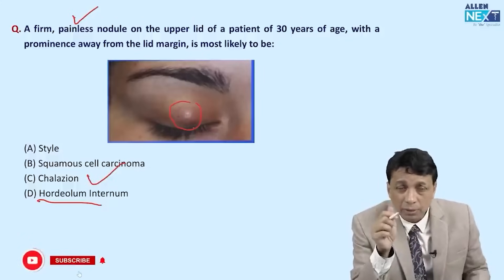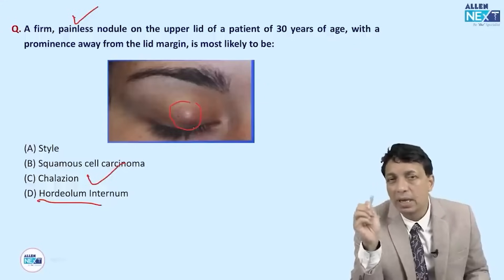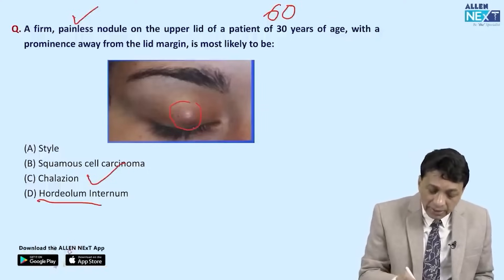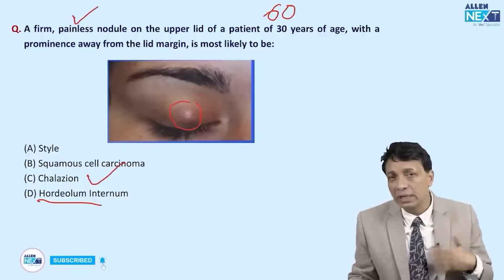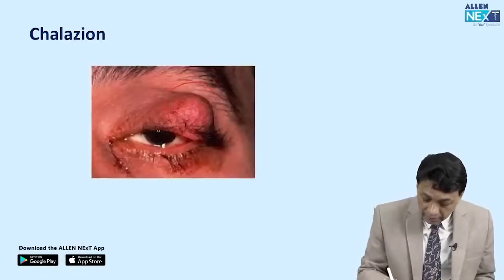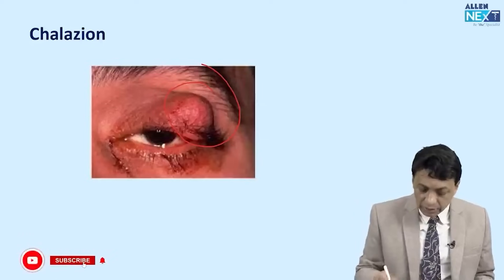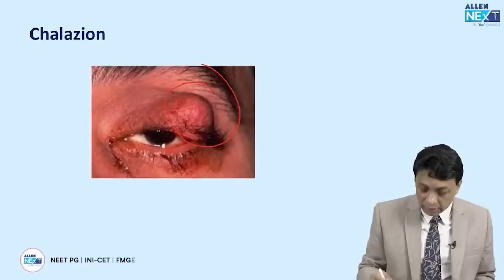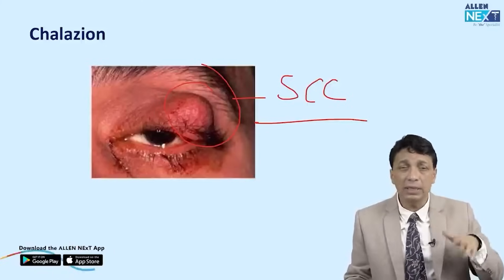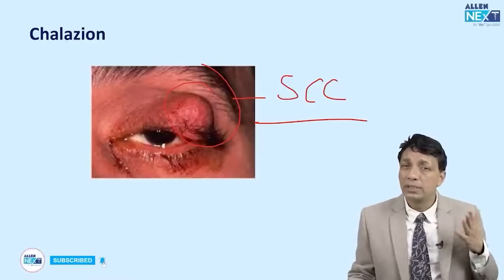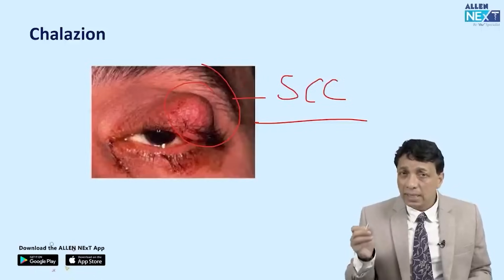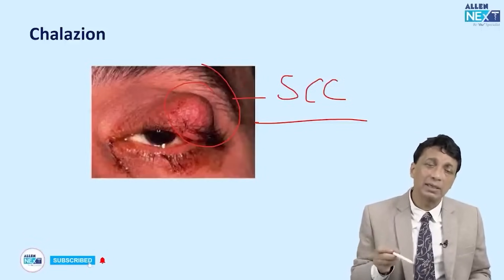An important differential diagnosis of chalazion is sebaceous cell carcinoma. If the question described a 60-year-old woman — since it predominantly affects older women — with a firm, painless nodule similar in appearance to a chalazion, it could actually be a sebaceous cell carcinoma, which is extremely malignant. Remember: a recurrent chalazion in older women should raise suspicion for sebaceous cell carcinoma, since Meibomian glands are modified sebaceous glands.